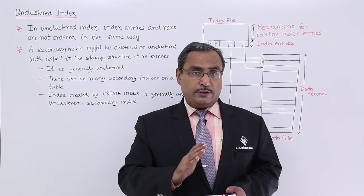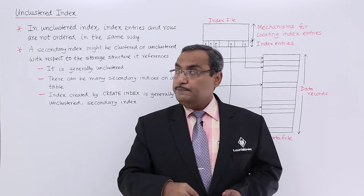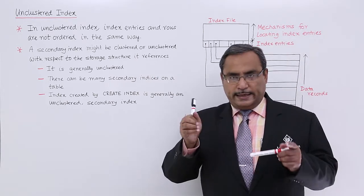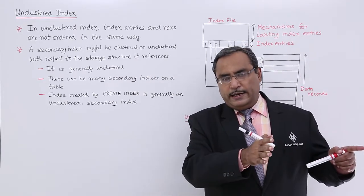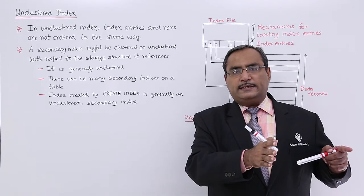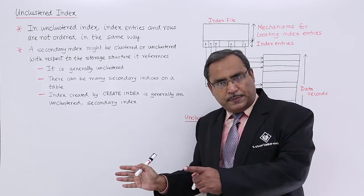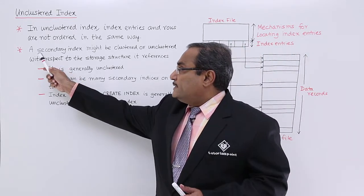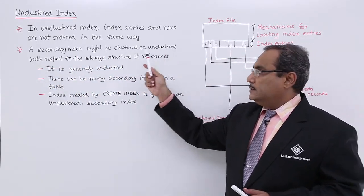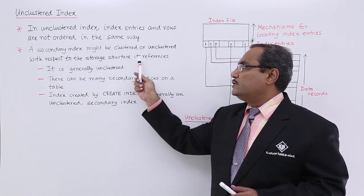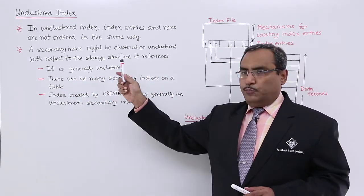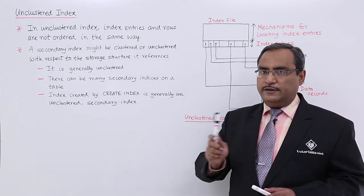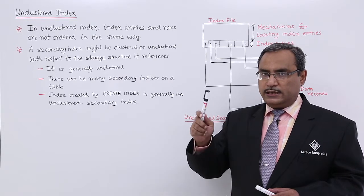That is the basic difference between clustered and unclustered index. A secondary index might be clustered or unclustered. A secondary index is a separate index and serves as a location mechanism, with index entries in a separate file from the rows or tuples. A secondary index might be clustered or unclustered with respect to the storage structure it references, but mostly it is generally unclustered, meaning the index order and the record order are different.